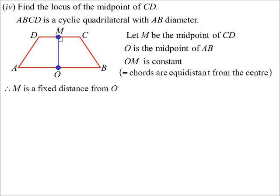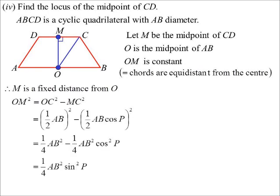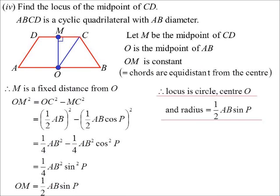Now, I might have got a little bit carried away, and I actually went and found the radius and all sorts of things of this, because it's fun. Yes, it is. OM squared would be OC squared minus MC squared. And so we can sub in what we've already worked out. And so, there we go. There's a pretty simple radius. Half AB sine P. That's probably a bit more information than what they were looking for. They were probably just looking for the simple answer. Hey, it's a circle.